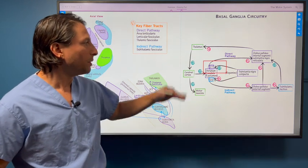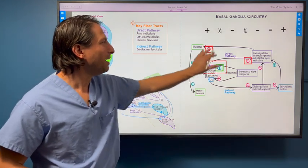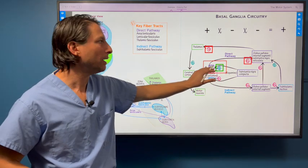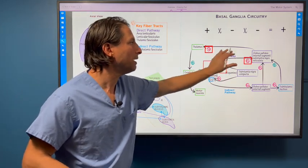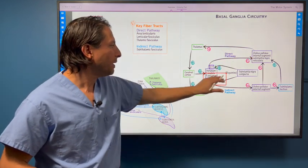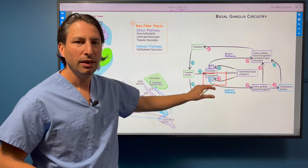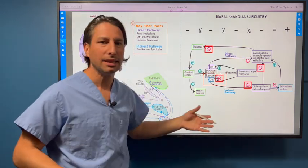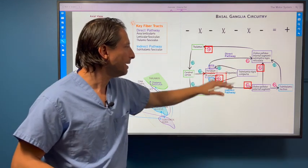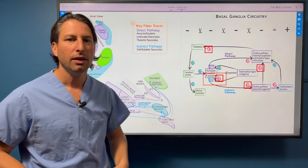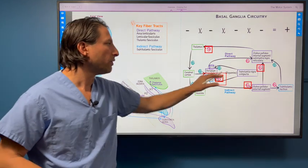So what does this produce? If we go back to our math here, if we excite the direct pathway, which is already excitatory, then we have excitation. In contrast, if we inhibit the indirect pathway, which was inhibitory, we have overall excitation. So both the direct and indirect pathways ultimately have excitatory effects on motor output through different means.